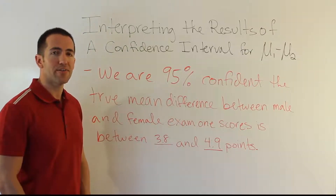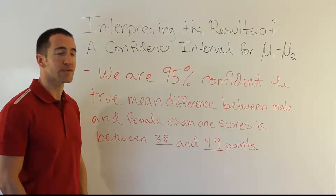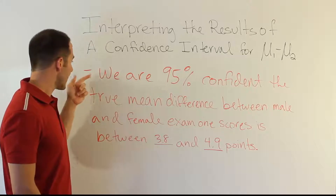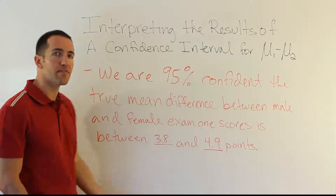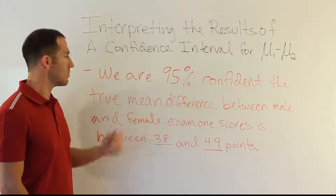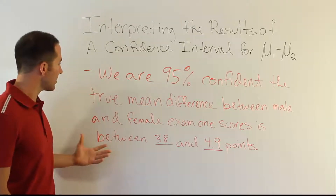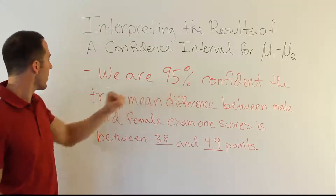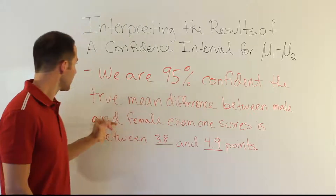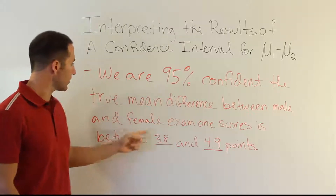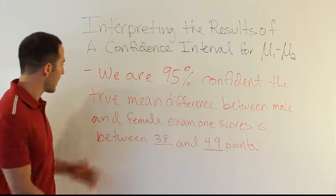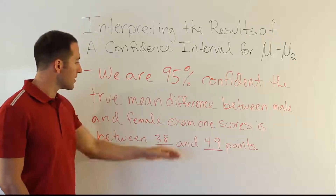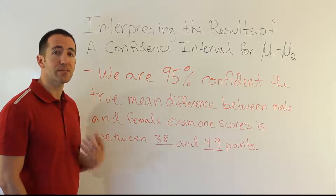In this video we're looking at the very important idea of interpreting the results of a confidence interval when forming a confidence interval for the difference between two population means. Here's the classic statement you might find if you constructed a confidence interval for the difference between male and female exam scores. We're 95% confident that the true mean difference between male and female exam 1 scores is between 3.8 and 4.9 points. Unfortunately, a lot of people reading this would not understand what it actually means.